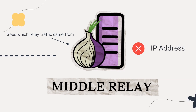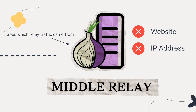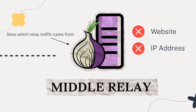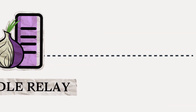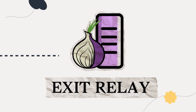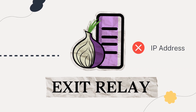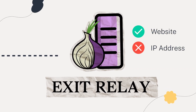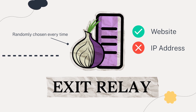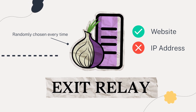The middle relay sees which relay the traffic came from and to which relay it goes to next. It can't see your IP address or the website you're connecting to. For each new circuit, your client randomly selects a middle relay from all available Tor relays. The exit relay is where your web traffic leaves the Tor network and is forwarded to your destination. It can't see your IP address, but knows what site it's connecting to. Your client randomly chooses the exit relay from all available Tor relays with an exit relay flag.